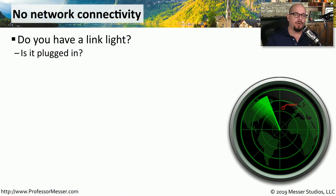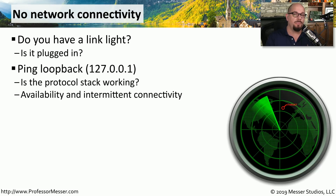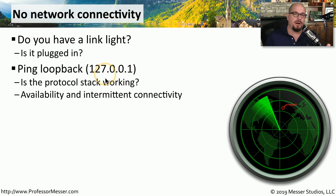If you're connected to a wired network and you have no connectivity, make sure the cable is connected and then look for a link light. This will tell you that you're connected to a switch on the other end of that cable. If you do have a link light, you can try to ping the loopback interface on your computer. That interface is 127.0.0.1. This will at least tell you if the protocol stack in your operating system is working properly, even if your network connection is not.